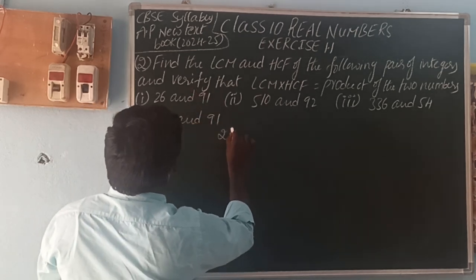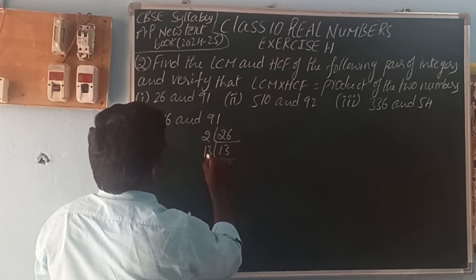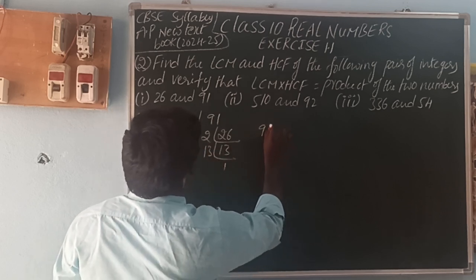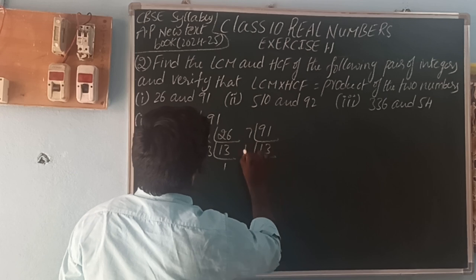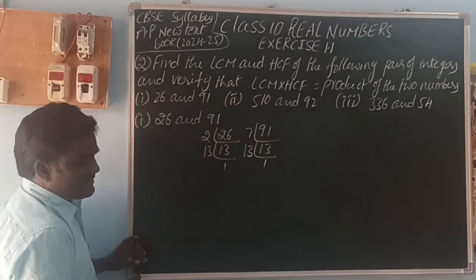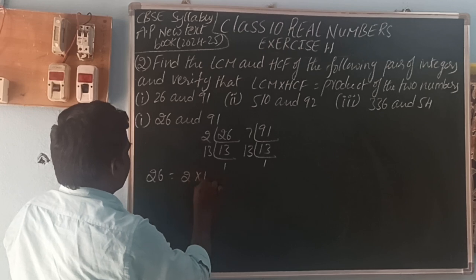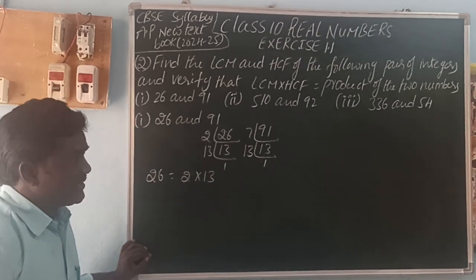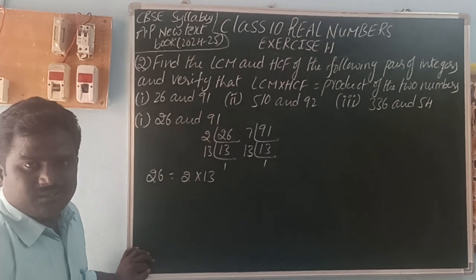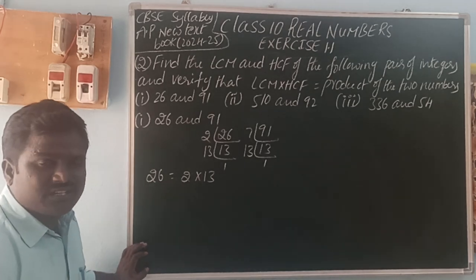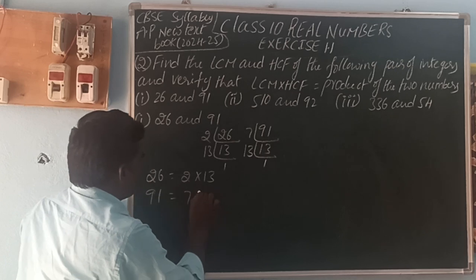For 26 and 91: 26 can be written as 2 × 13, and 91 can be written as 7 × 13. We can find the HCF and LCM using the prime factorization method — you can also use the division method. The common prime factor of 26 and 91 is 13, which appears one time each. So HCF is 13.